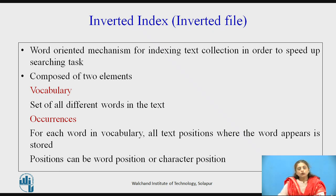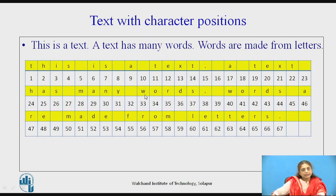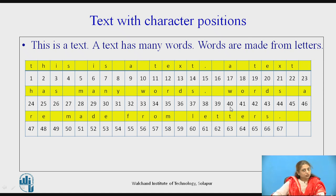Occurrences represent the position of the keywords identified in the vocabulary. This position can be the character position or the word position. For example, the word 'text' is occurring at the character position of 19, or the word 'words' is occurring at the position of 40. When talking about word position, the index number of the word in the sequence is used.